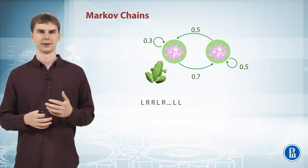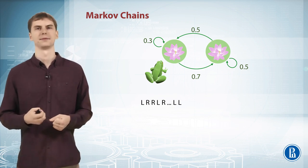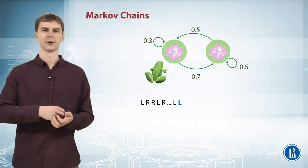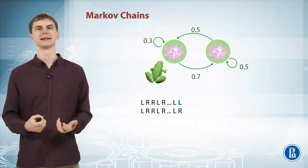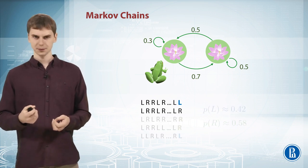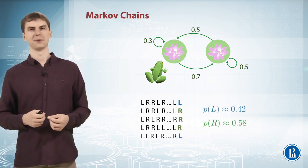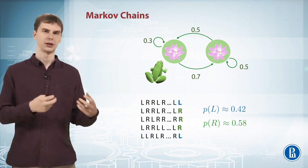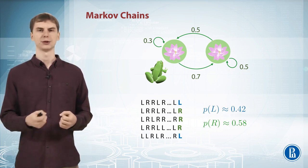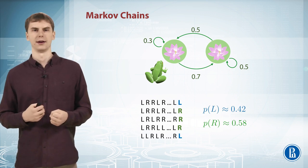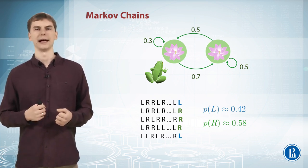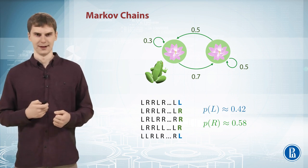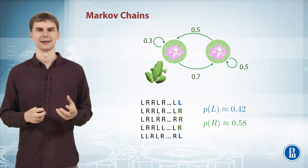So let's simulate our frog for 1 million steps and say the last step was, for example, left. We write down 'left,' then simulate another path through state space and the last state was, say, right. We write that down. By doing this several times we get a sample from the distribution at the millionth step, given the frog started on the left. This will be close to probabilities 0.42 and 0.58 — and indeed we can see two out of five lefts and three out of five rights, which is close to 0.42 and 0.58.